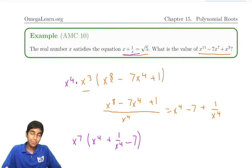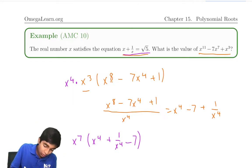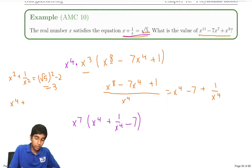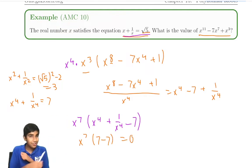Now take a look: x⁴ + 1/x⁴. We know the value of x + 1/x equals √5. Remember what we learned earlier? We know that x² + 1/x² is just this squared minus 2, which equals 3. And we have x⁴ + 1/x⁴ equals 3² - 2, which is 7. So that means this is just x⁷ times (7 - 7) = 0. The answer is just 0.